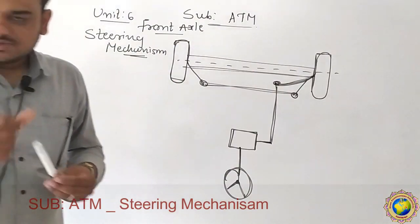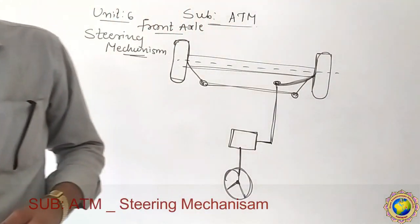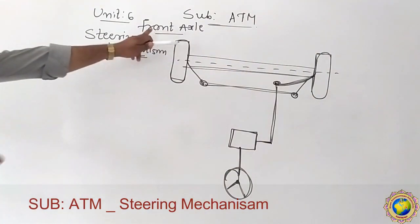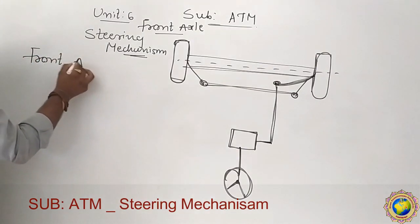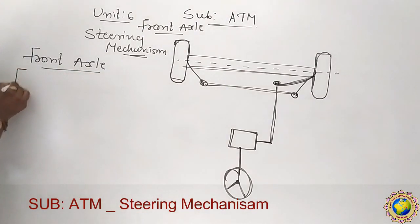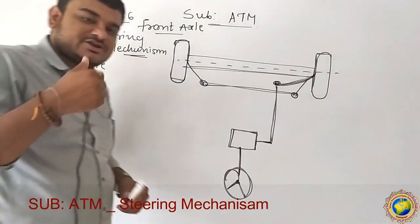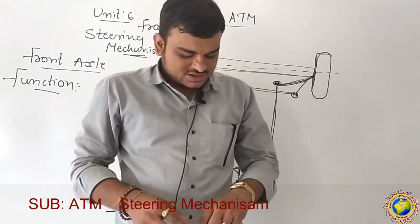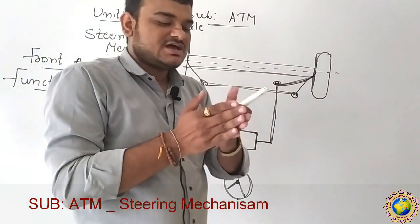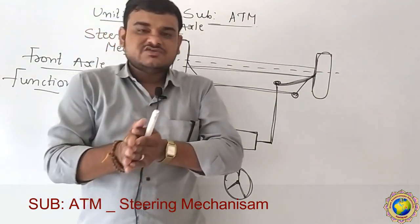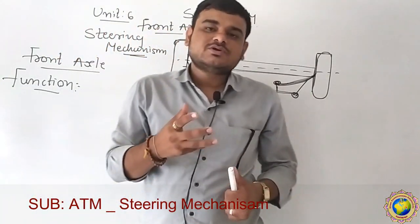We are starting Chapter 6 — Front Axle and Steering Mechanism today. First we will see what is front axle and what are its functions. We previously discussed Unit Number 5 — Rear Axle. In that we discussed what components come in rear axle assembly, how the rear axle assembly is constructed, its purpose, which components are supported on the rear axle, and which components are fitted on the rear axle.